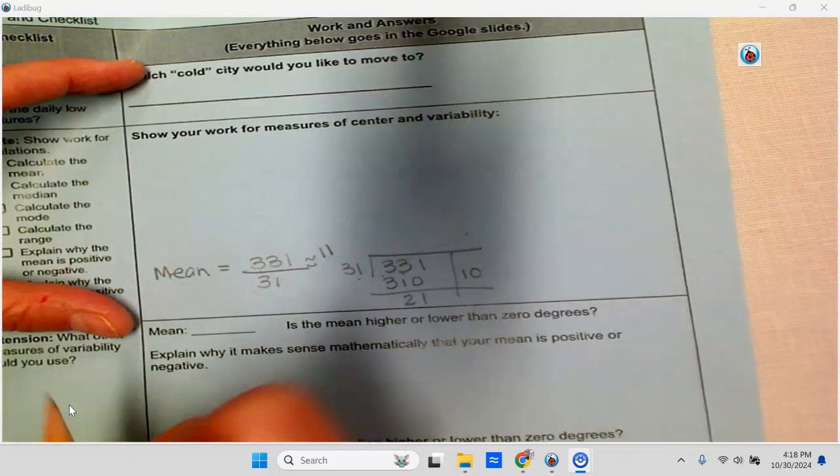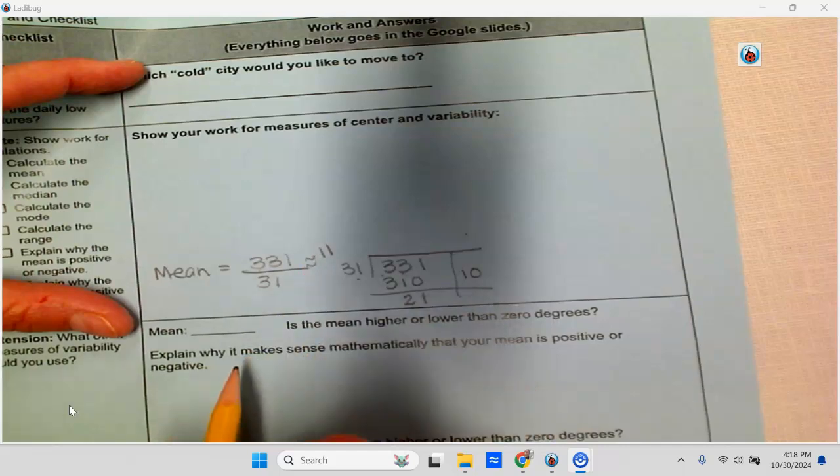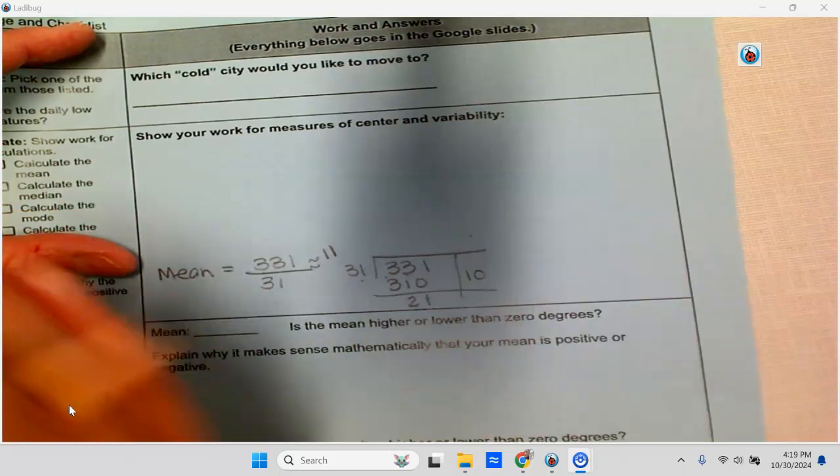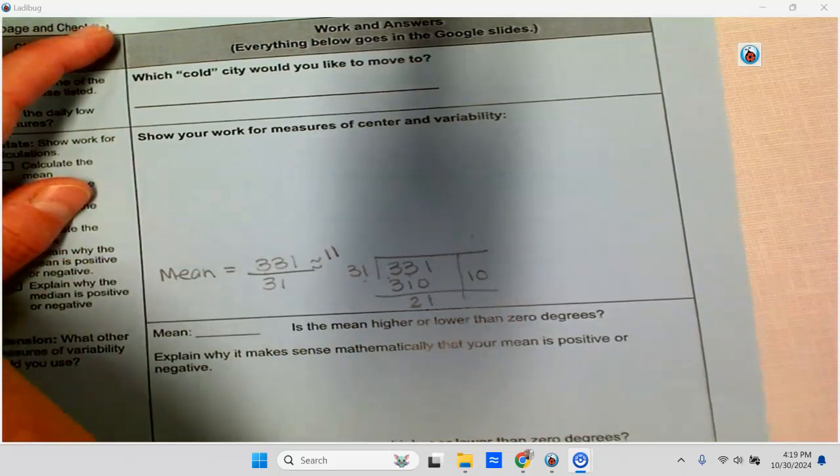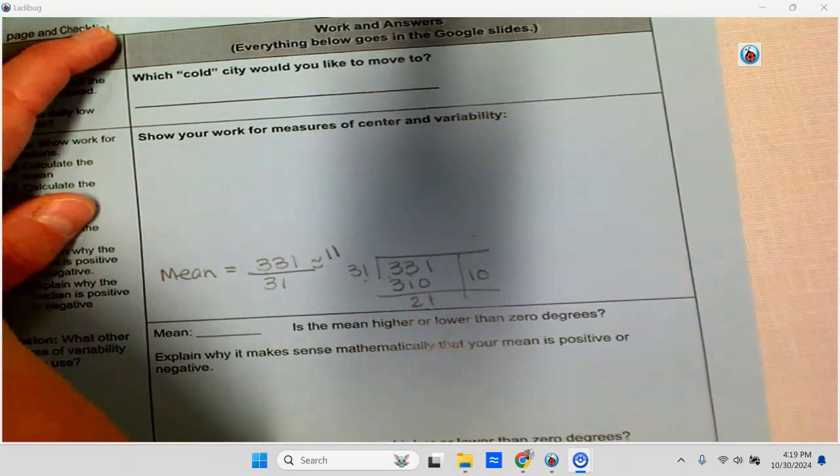So I think for most of them, you'll find that the division is probably going to be like a small number that you get here. So the mean is about 11, which is positive degrees. So that's my strategy for being able to find the mean of 31 numbers.